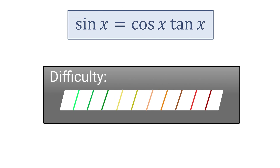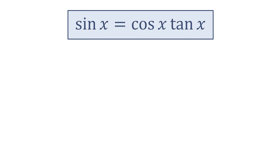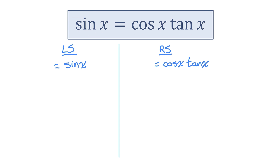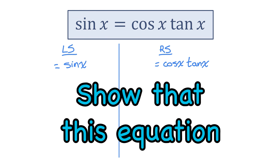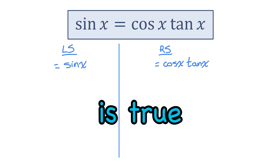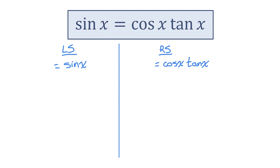Identity number one. Let me separate into left side and right side. To prove this is an identity, I have to show that this equation is true for all values of the variable. So I just have to show both the left and right are actually the exact same expressions, and I'll do that using identities I know to be true.